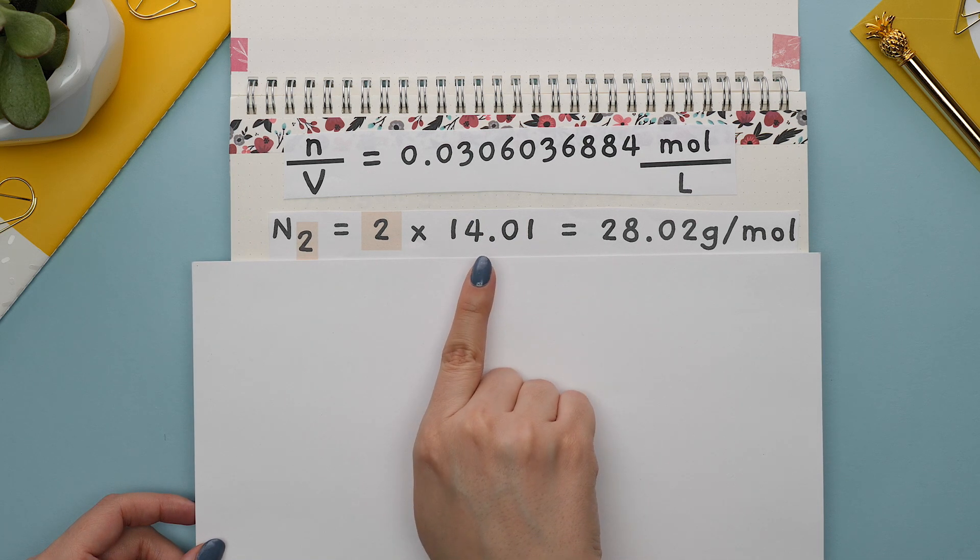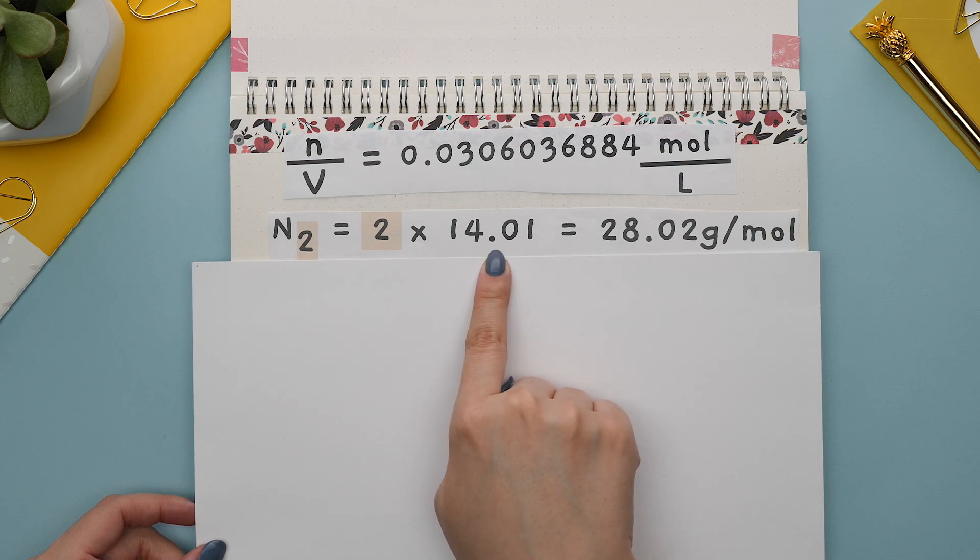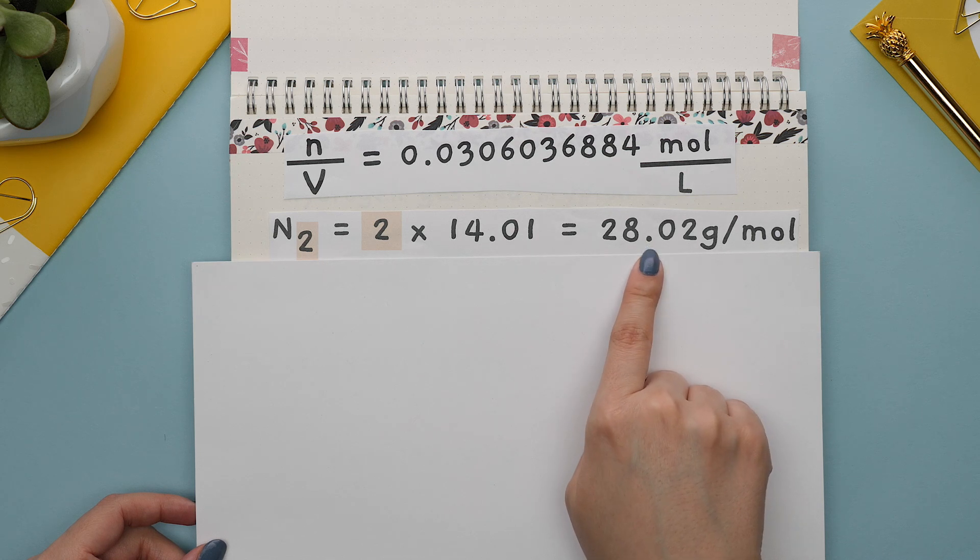Using our periodic table we will find the molar mass of N2 by multiplying two times the mass of nitrogen to get 28.02 grams per mole.